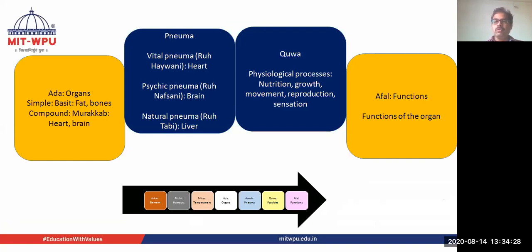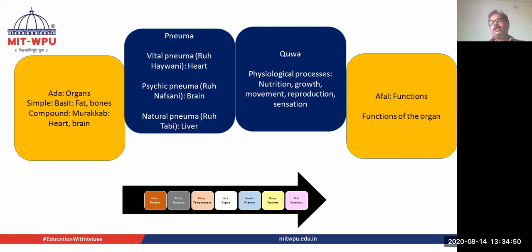Then there is the pneuma, or Ru, which comes from the subtle components of the humor. There are three types of pneuma: vital pneuma, called ruha haiwani; psychic pneuma, called ruha nafsani; and natural pneuma, called ruha tabii. Vital pneuma is located in the heart, psychic pneuma in the brain, and natural pneuma in the liver. The functions associated with pneuma include nutrition, growth, movement, reproduction, and sensation.